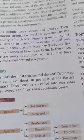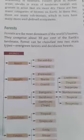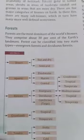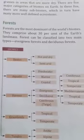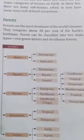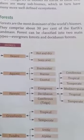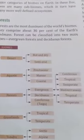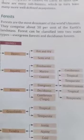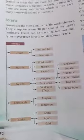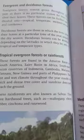Forests mostly grow in hot and humid climates. Forests may be classified into the following three types: forests in the tropical region, forests in the temperate region, and forests in the taiga region.